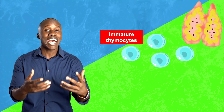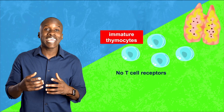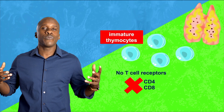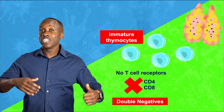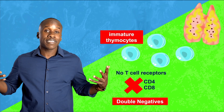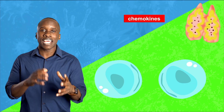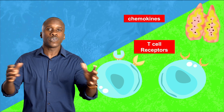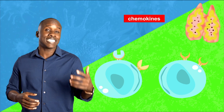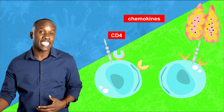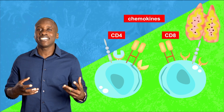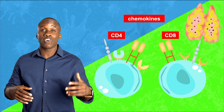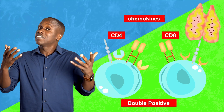These immature T cells don't have T cell receptors on their surfaces, nor do they have two very important molecules — CD4 and CD8. They are considered what we call double negatives: no CD4, no CD8. The chemicals released by the thymus will stimulate the T cells to produce T cell receptors, or TCRs. The next thing they do is stimulate the T cells to produce CD4 and CD8, accomplished by activating the genes responsible for producing these things. Now we have T cell receptors as well as both CD4 and CD8, and the cells are considered double positive.